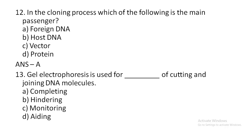Gel electrophoresis is used for the cutting and joining of DNA molecules. The options include: option D: combining, option C: monitoring, option D: hiding. What should be hindering?